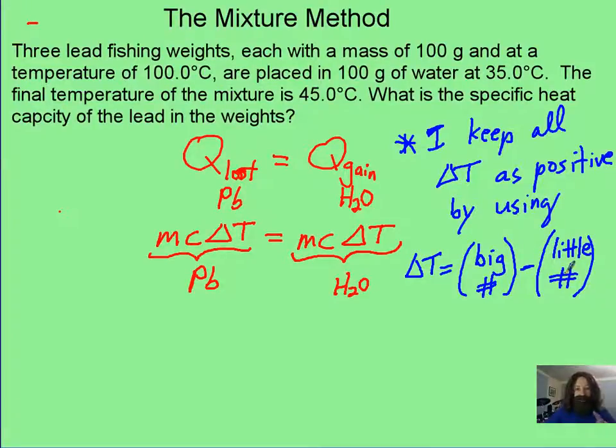Now, you don't have to do that. You can use traditional final minus initial, but then you might want to put a negative on one of those sides to keep your sign situation okay. Now, fill in your numbers. See how far you can get in order to find that specific heat capacity of lead.